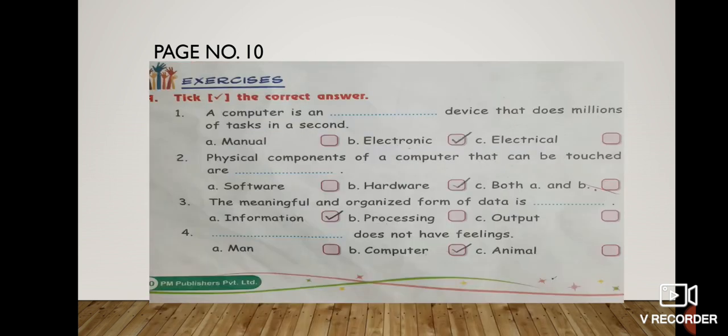Next is tick the correct answer. A computer is a device that does millions of tasks in a second. Manual, electronic, electrical. So you will tick electronic. Children, don't get confused between electronic and electrical. The correct answer is electronic.